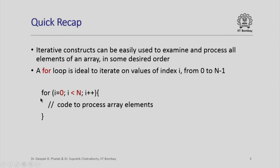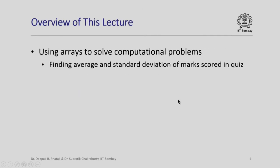Here is an example: for i equal to 0, i less than n, i++, then I can write code to process array elements. Observe the starting value and end condition. I want to process the array elements from 0 to n minus 1, so I should start with i equal to 0 and I should check the final condition to be i less than n. Having seen this, we shall now proceed to look at the use of arrays in solving computational problems.